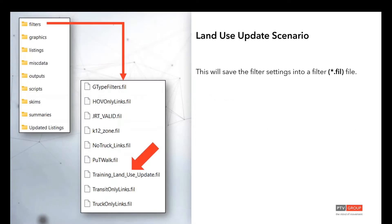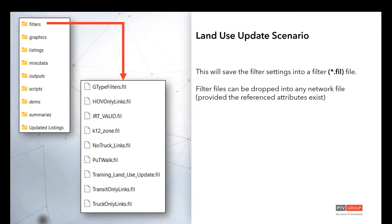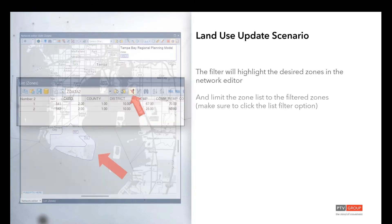Once you've saved that filter file, you can reload it in the future. It can be dropped into any network file, assuming those objects exist. This is why we had our conversation about what to do with ID numbers across different scenarios — it's best to keep zone IDs as consistent as possible, because then filters and things like that will continue to work. The filter will activate those two zones, making them really easy to find.